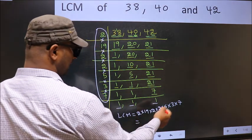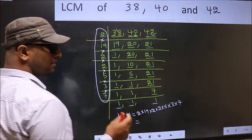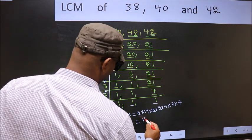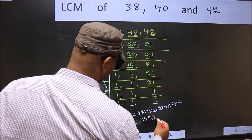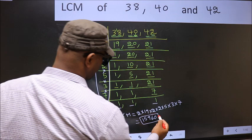When we multiply these numbers, we get 15,960. This is our LCM.